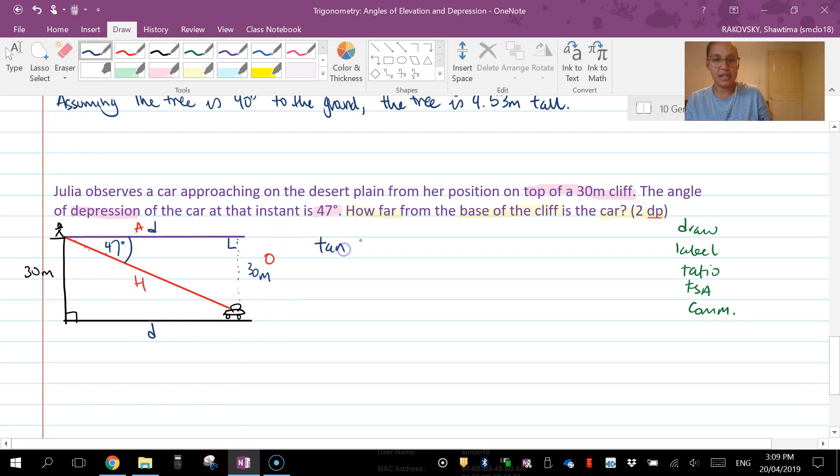Here we go, so I've got tan theta equals opposite over adjacent. Substitute: tan 47 equals opposite, this time it's 30 over D. So we're going to have to do what we call the switcher, the switching. D equals 30 divided by tan.